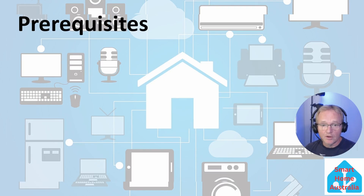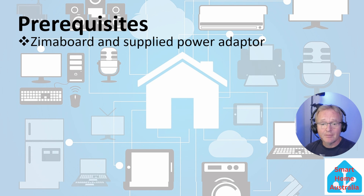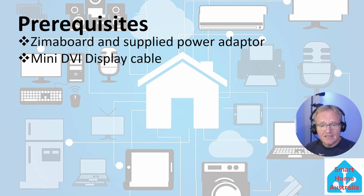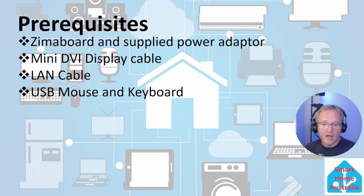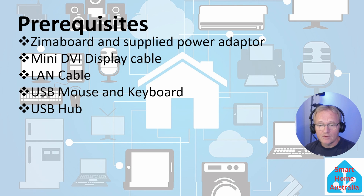To get this to work you will need your Zimmer board and power supply, a mini DVI cable so that you can view the video output, a LAN cable to connect your Zimmer board to the internet, a USB mouse and keyboard to control your Zimmer board, and a USB hub to connect your keyboard and mouse — leaving a free USB port for the installation media.